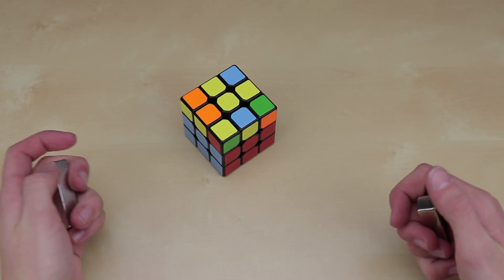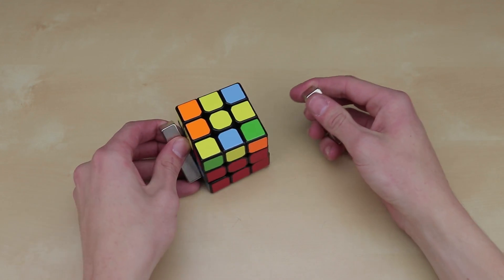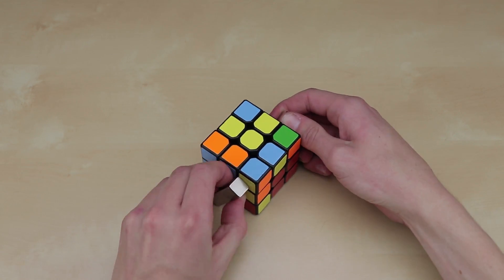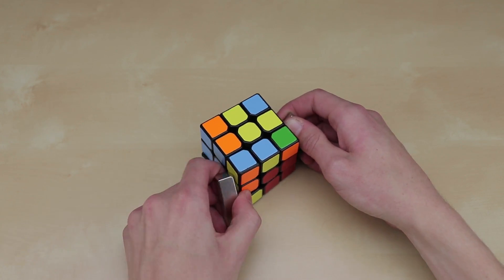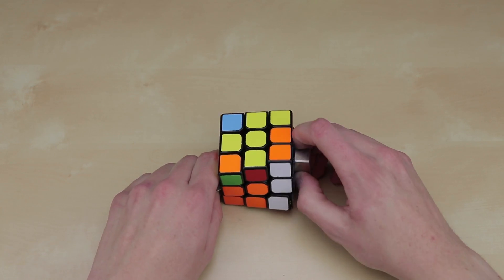All right, now onto OLL. I don't actually want to attempt the actual algorithm for this case because it's a little bit long and I really do not want to mess it up. So let's just do the beginner's method look algorithm like this. Let's go ahead and finish up OLL doing this algorithm right here.